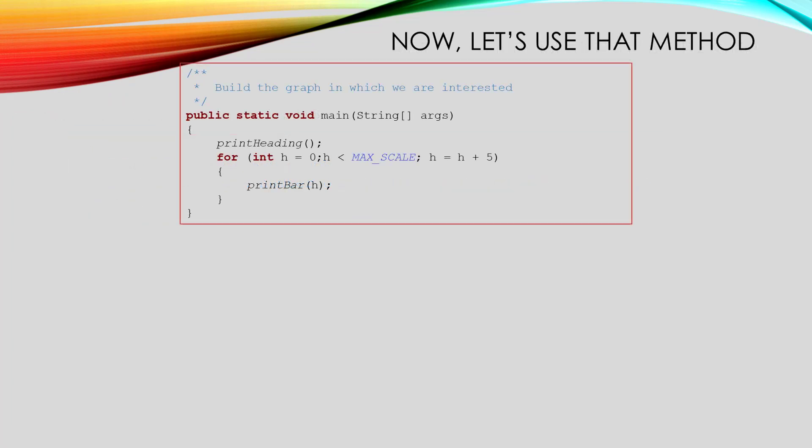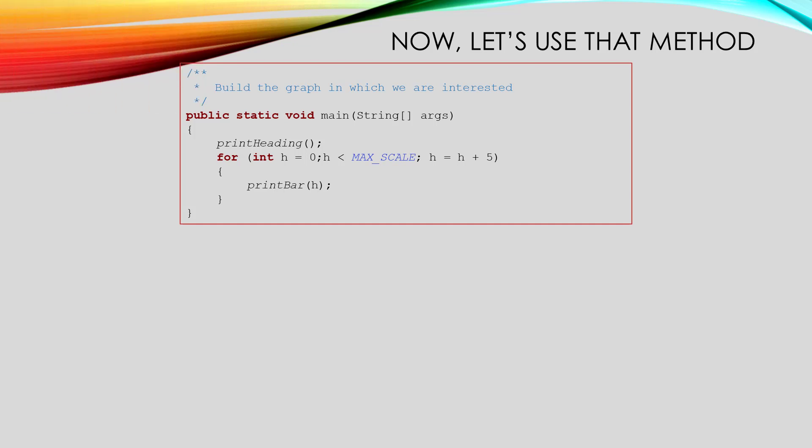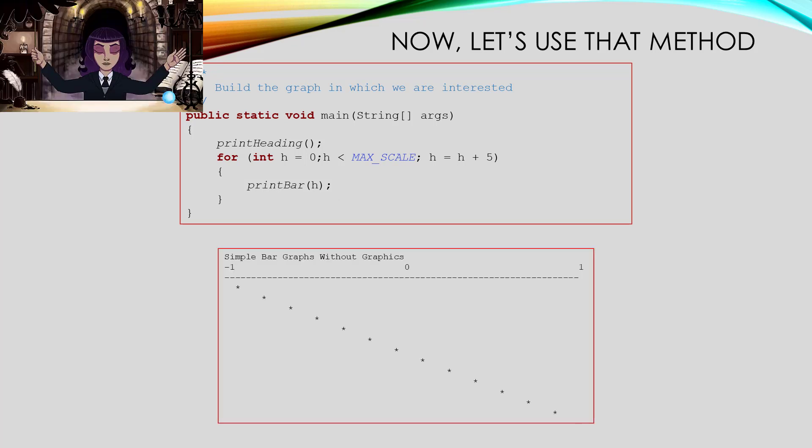Now that we can print one line, we just need to print a series of them, with the number of spaces in each being one more than it was in the previous line. We want the number of spaces to be 0, 5, 10, and so on, up to the width of our graph. Yep, and we can do that with a for loop. The for loop variable is h, and it starts at 0. After each pass through the loop, it gets bigger by 5, and we let the loop run while h still fits in our graph. Inside the loop, we just have to pass h into our print bar method. That will print out one line with h spaces before the asterisk. Now we've built the code for our simpler graph. Woohoo!